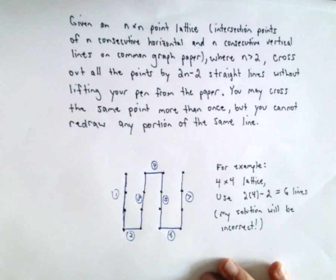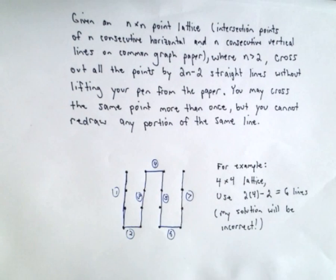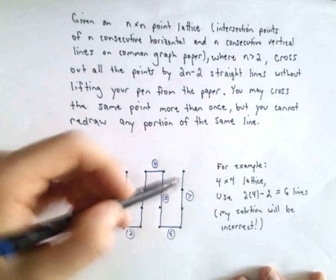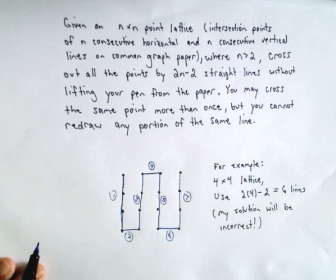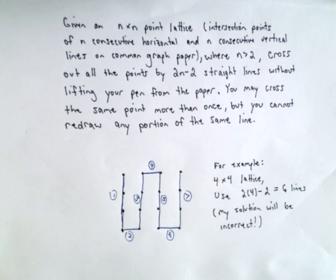Which is not optimal, but I have crossed out all the dots. So your goal is to cross out all the dots using only six lines, and what you want to do is basically try to create an algorithm to do this.